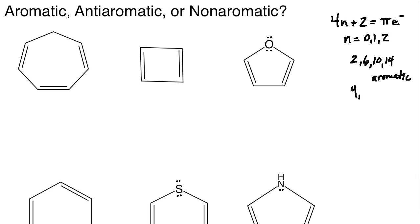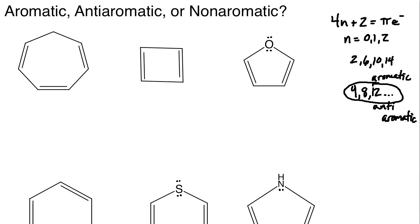Compounds with 4, 8, or 12 pi electrons would be considered anti-aromatic. If a compound fails rule one or two — not cyclic or not flat and conjugated — it is non-aromatic. Anti-aromatic compounds are very unstable and will sometimes try to break apart to reach a non-aromatic state, while aromatic compounds are highly stable.